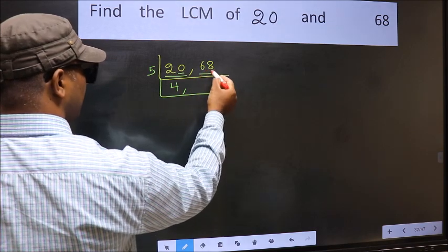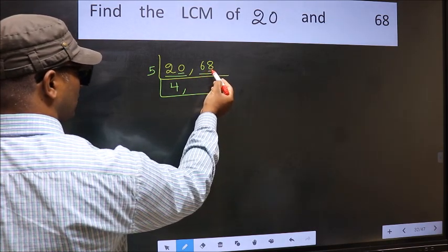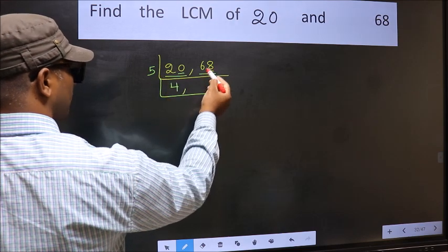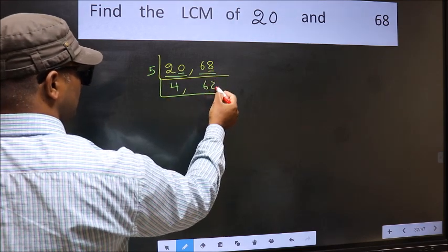The other number 68. Last digit neither 0 nor 5. So this is not divisible by 5. So you write it down as it is.